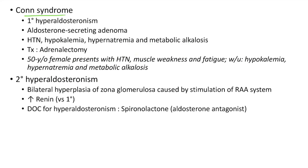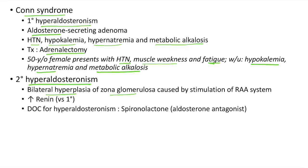Conn's syndrome, also known as primary hyperaldosteronism, occurs due to an aldosterone-secreting adenoma. Clinical features include hypertension, hypokalemia, hypernatremia and metabolic alkalosis. It is treated with adenectomy. Clinical case: A 50-year-old female presents with hypertension, muscle weakness and fatigue. Workup shows hypokalemia, hypernatremia and metabolic alkalosis — a classic case of Conn's syndrome. In secondary hyperaldosteronism, there is bilateral hyperplasia of zona glomerulosa due to stimulation of the renin-angiotensin-aldosterone system. In secondary hyperaldosteronism the renin is elevated, whereas in primary hyperaldosteronism there are low levels of renin. The drug of choice for hyperaldosteronism is spironolactone, which is an aldosterone antagonist.